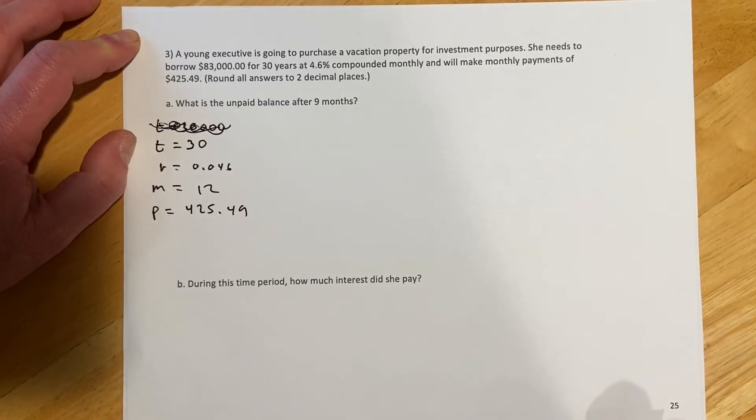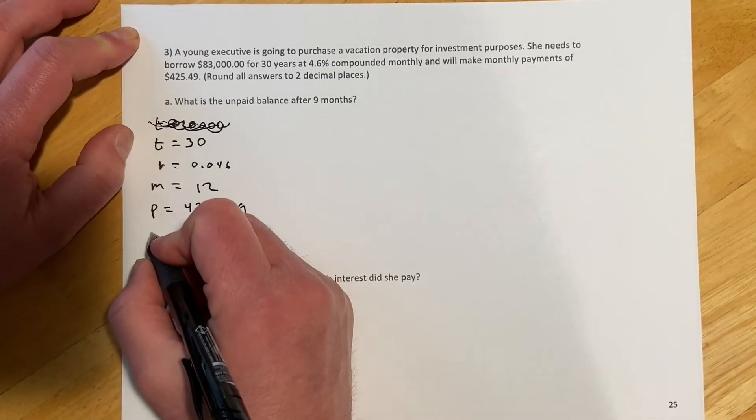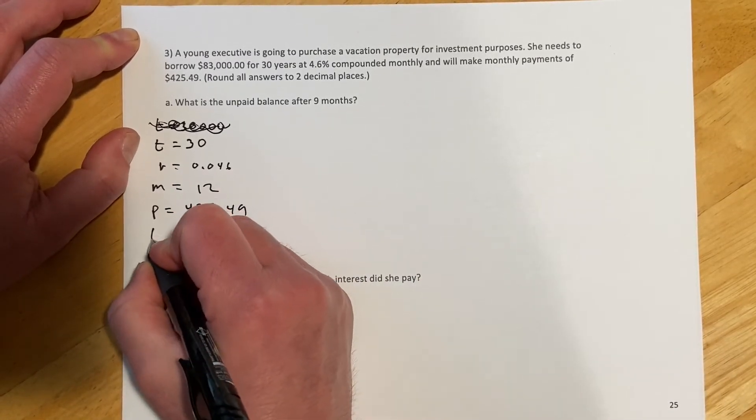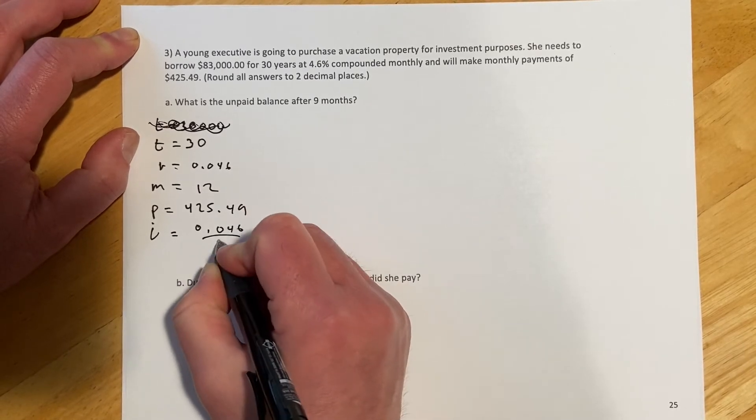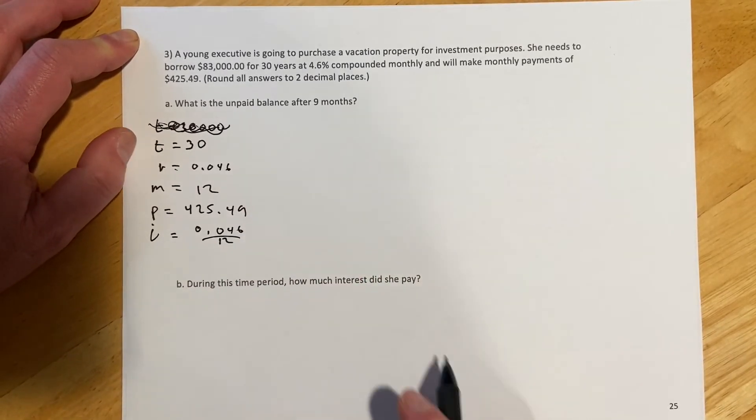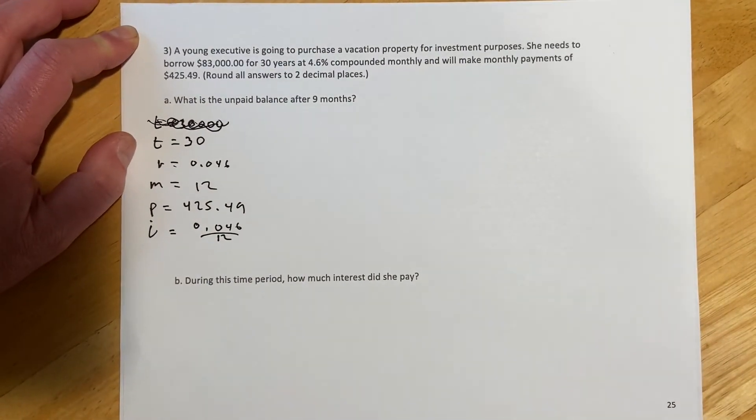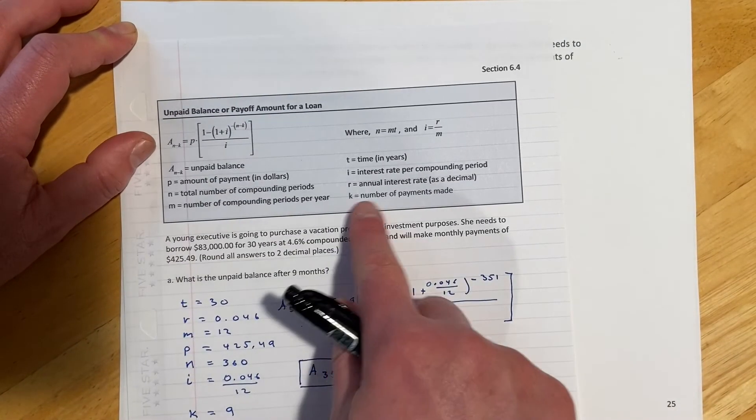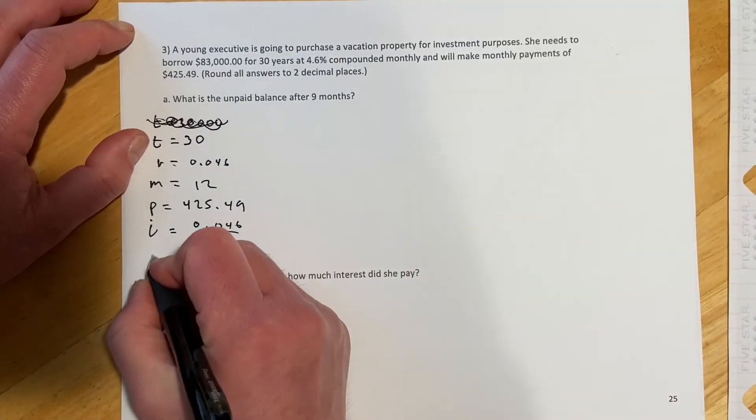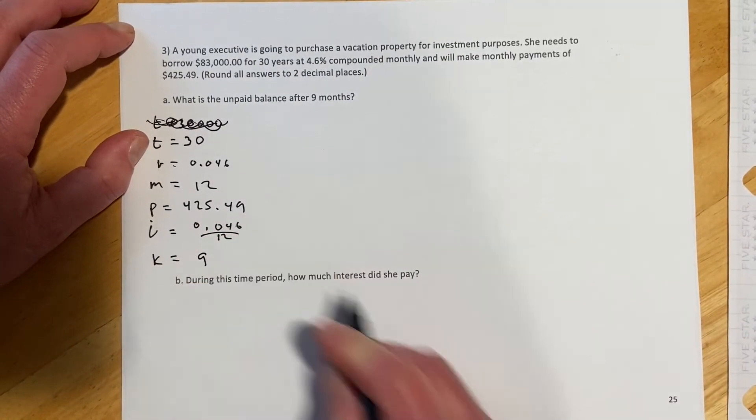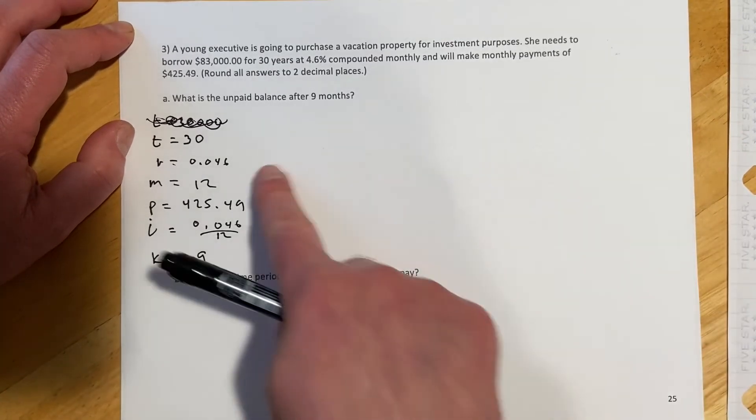And monthly payments. There's our payments of 425.49. And then, our two calculated values are going to be I equals 0.046 over 12. And then, in this case we have K. And K is the number of payments made. And so K will be 9. And so now I'll cut away and get everything set up.